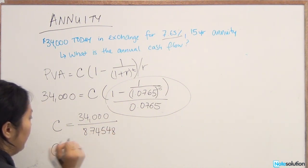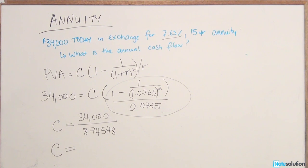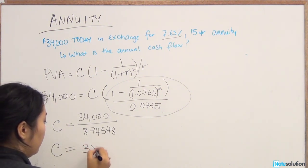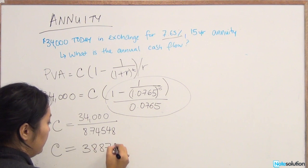From here, you can easily calculate the value of the annual cash flow, which is $3,887.72.